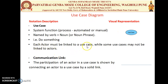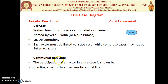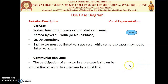Each Actor must be linked to the Use Cases. There are some Use Cases which are not linked to any Actor, but those Use Cases are separate. The third notation is the Communication Link, which is shown by a single solid line connecting an Actor to the Use Cases.